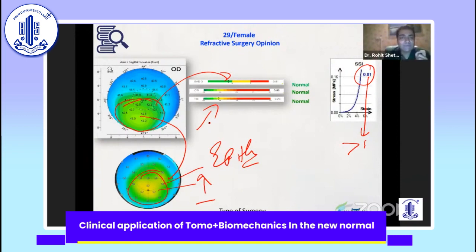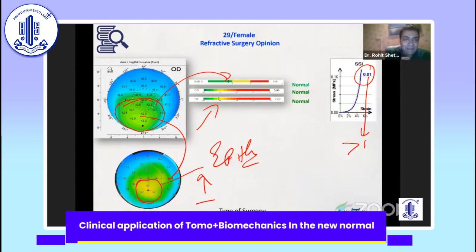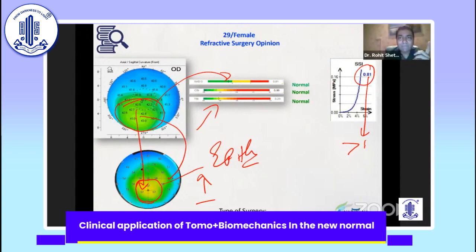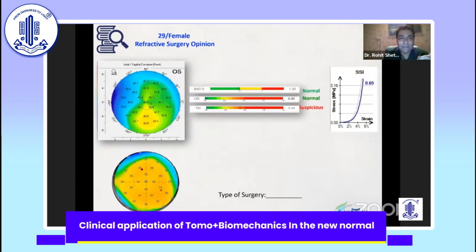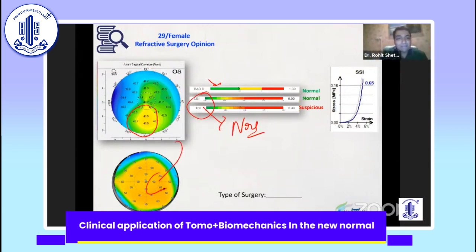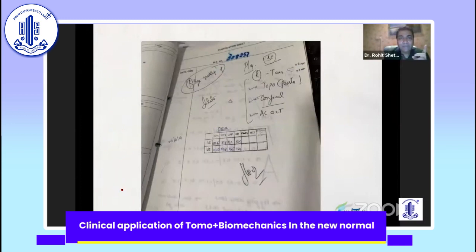If there was no biomechanics in this patient, I probably would not have done epithelial mapping — it's not accessible to everybody. You can see that epithelial thickness is high exactly in that zone. So this may be a person sleeping with eyes open or on exposure. This case classically explains that biomechanics was stronger in explaining that this was a normal eye and not a keratoconic eye. The same thing in the next case — the bad D is abnormal here, but the CBI and TBI are both normal. Look at the epithelium: it's completely thick in that area. Even though the topography can look abnormal, sometimes your biomechanics can actually pick up the truth.